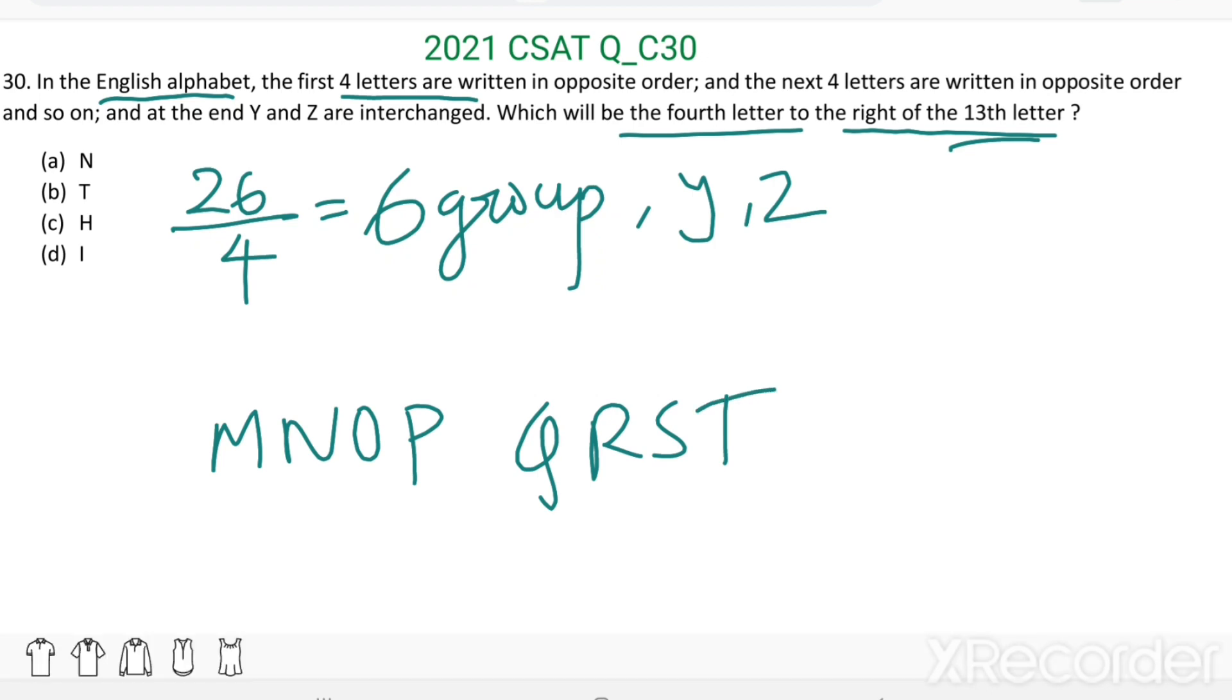Read the letters in the group in opposite order. Then P-O-N-M-T-S-R-Q. Thirteenth letter is P. This is the thirteenth letter.